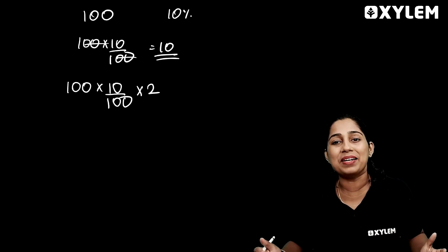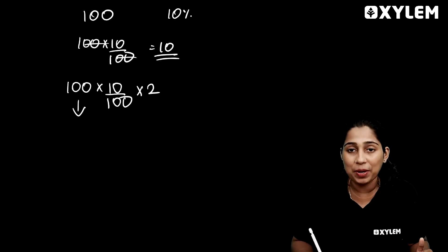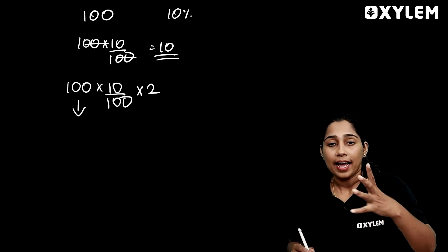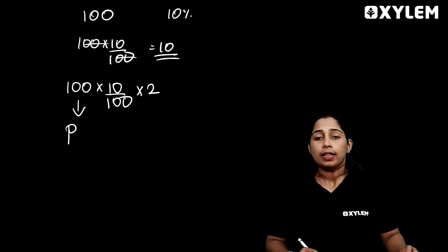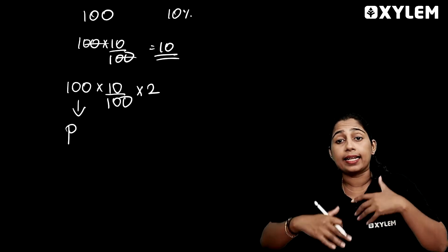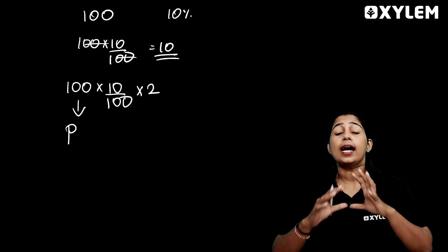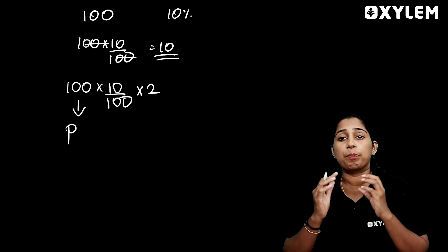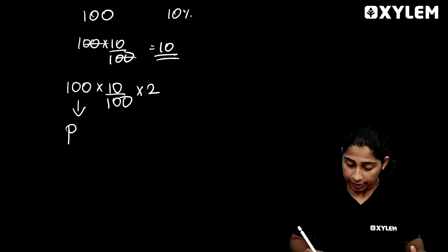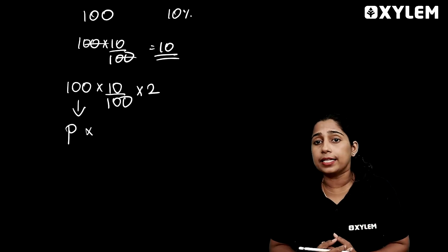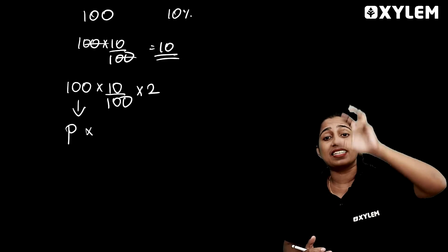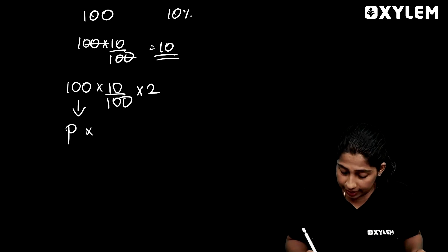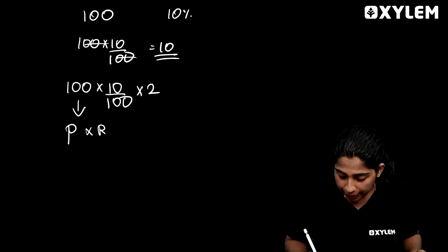This is our simple interest equation. What is the principal amount? That is our principal amount — P. What is the rate of interest? The interest rate is the percentage. What is the number — 100? What is the rate of interest?